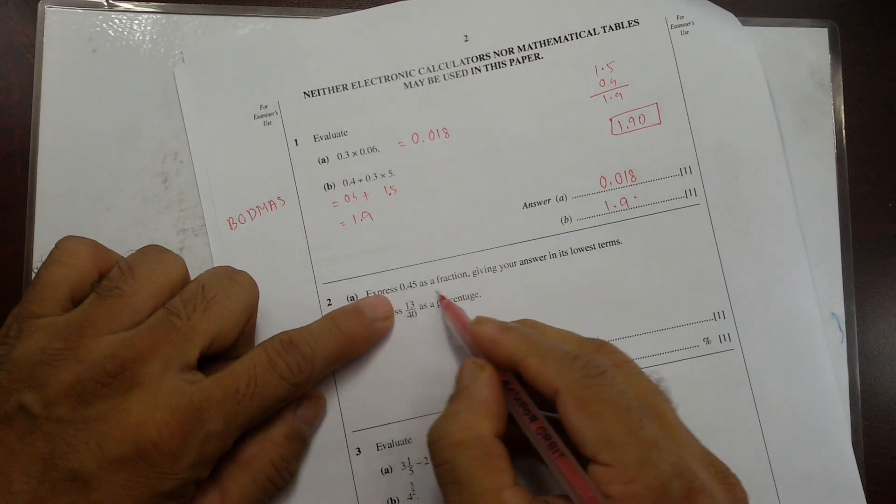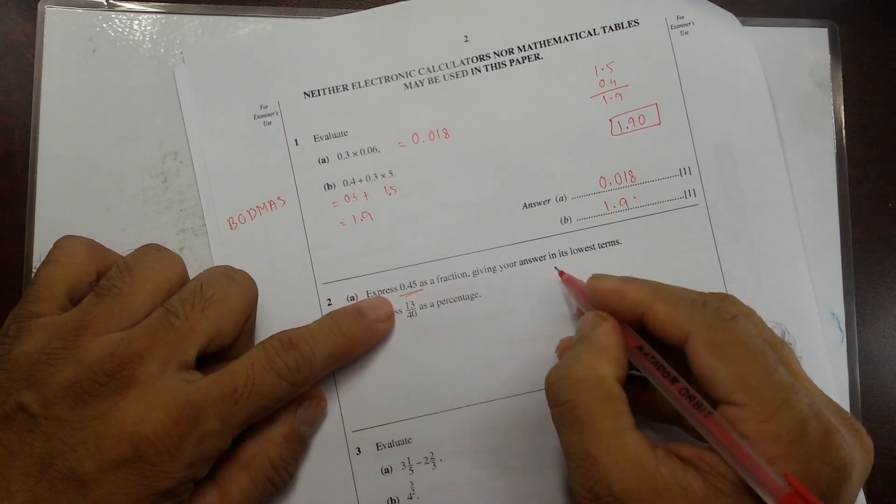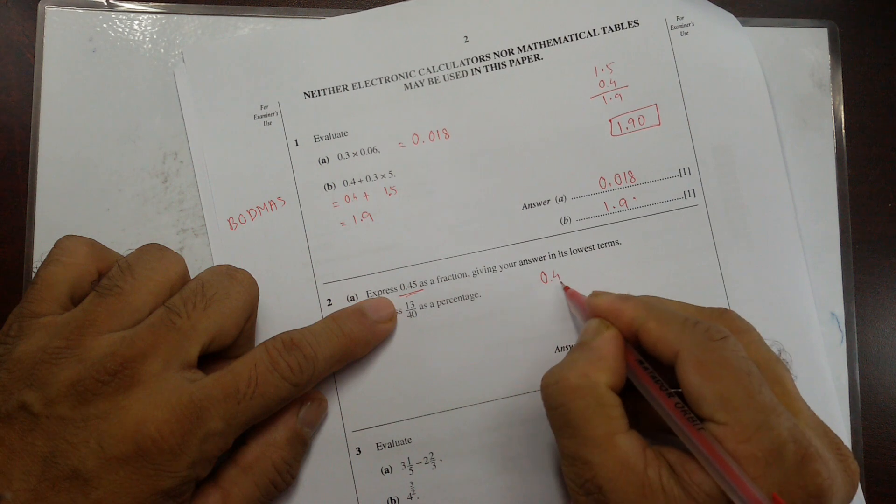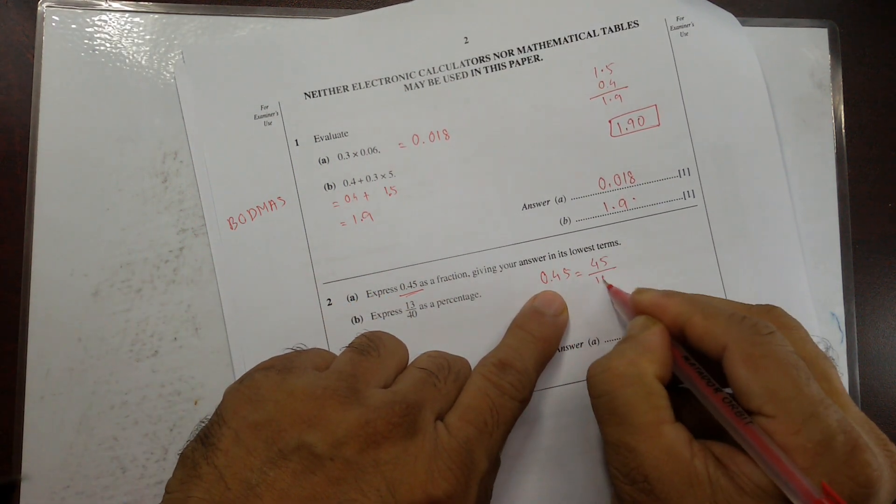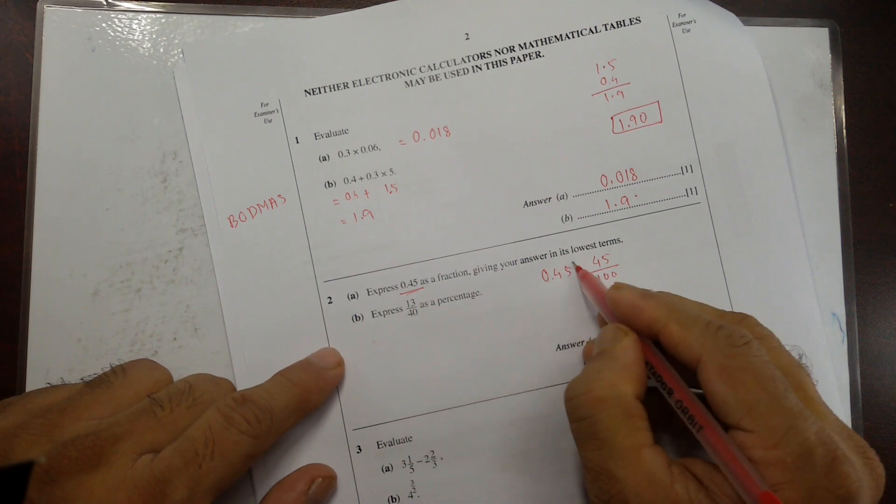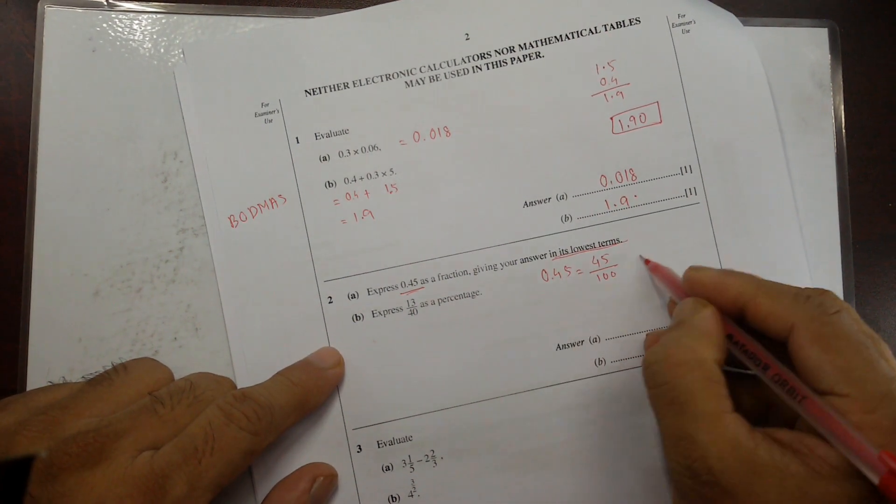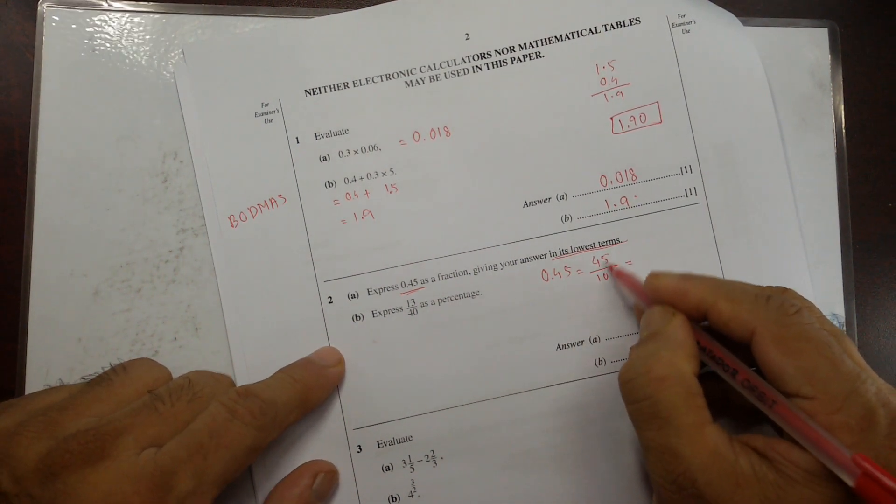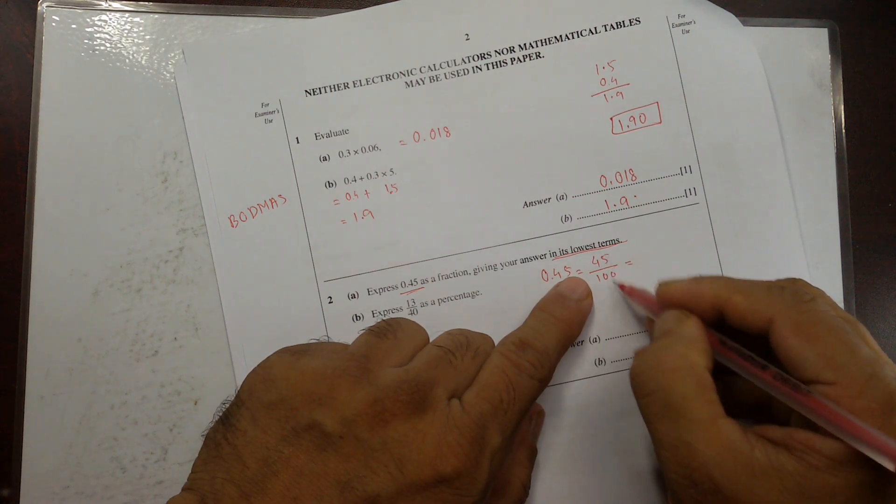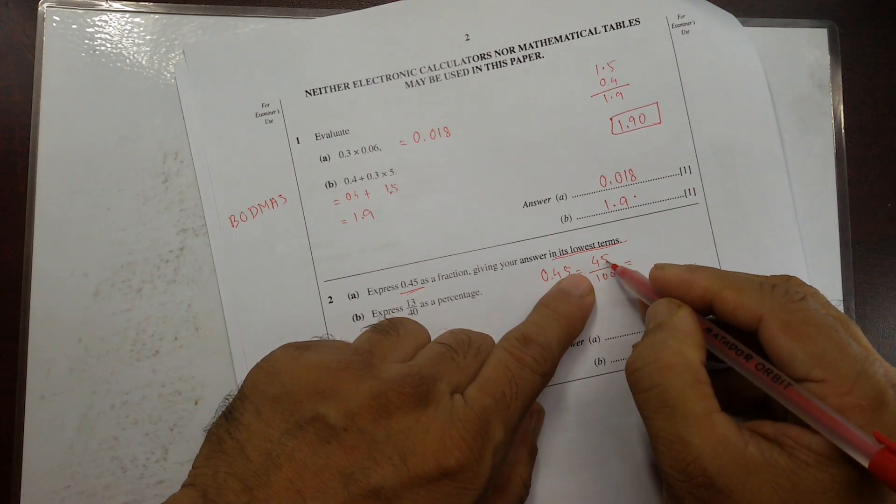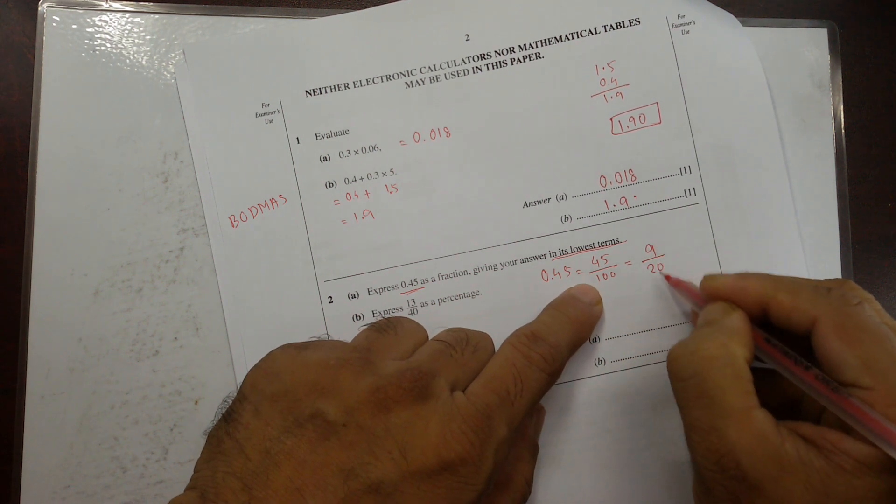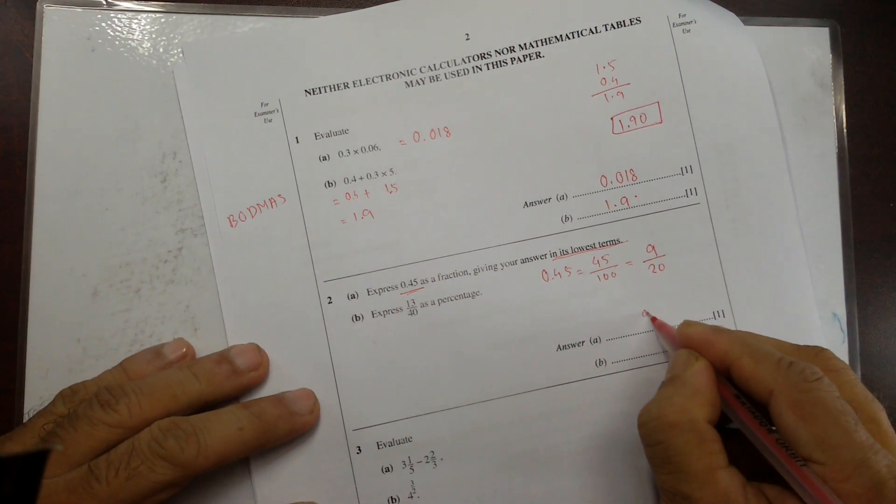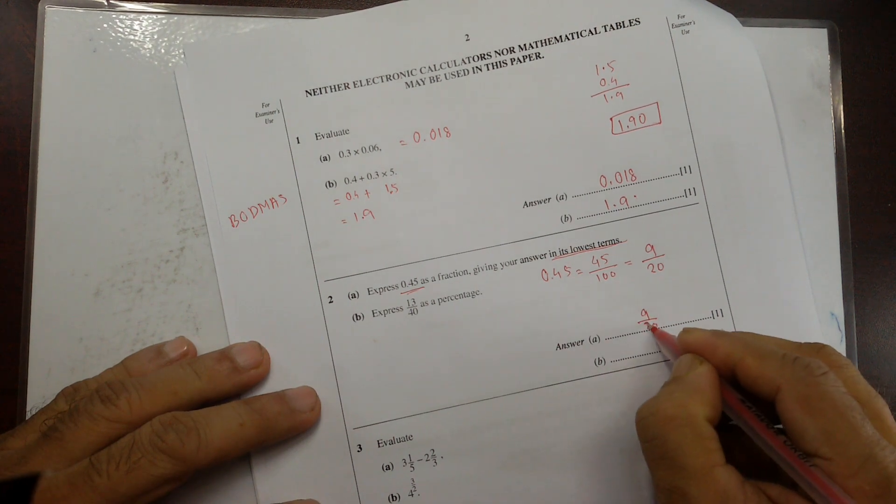Express 0.45 as a fraction. Now 0.45 can be written as 45 divided by 100. Then it says giving your answer in its lowest term. So lowest term means you can simplify that as much as possible. So both of them are divisible by 5: 5, 9, 5, 20. They don't have any more common factors. So that's 9 by 20. That's the answer, 9 by 20.